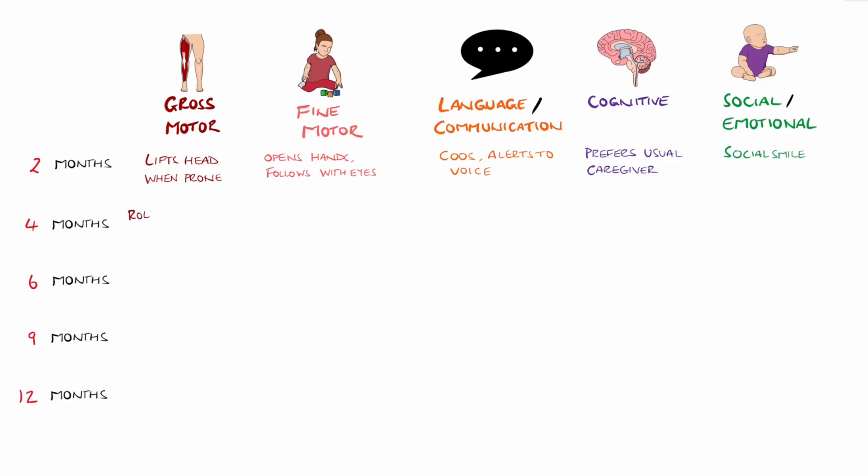At four months, gross motor milestones include rolling front to back and sitting with support, while fine motor milestones include reaching for toys and bringing hands to mouth. In terms of language, they babble and turn to voice. Cognitively, they anticipate routines. Socially, they are soothed by their parent's voice and they can laugh.